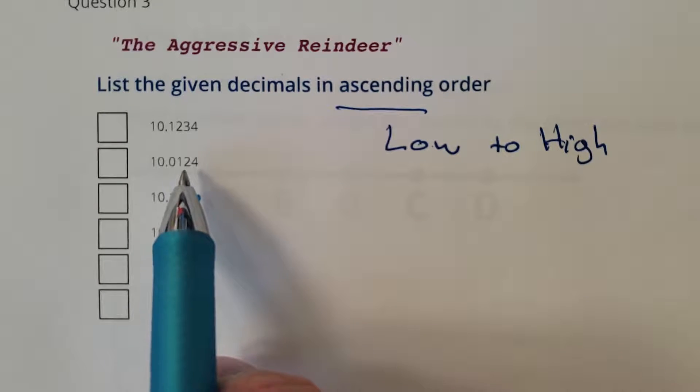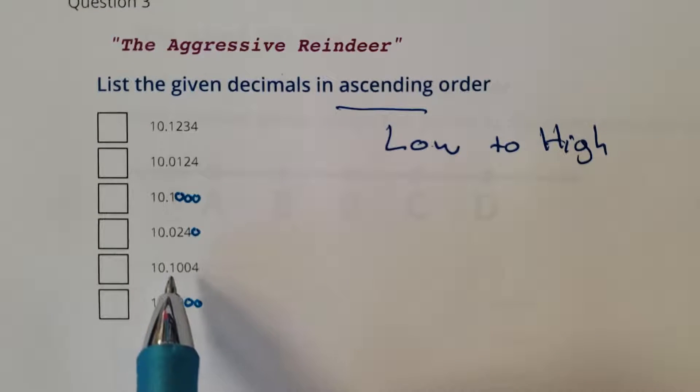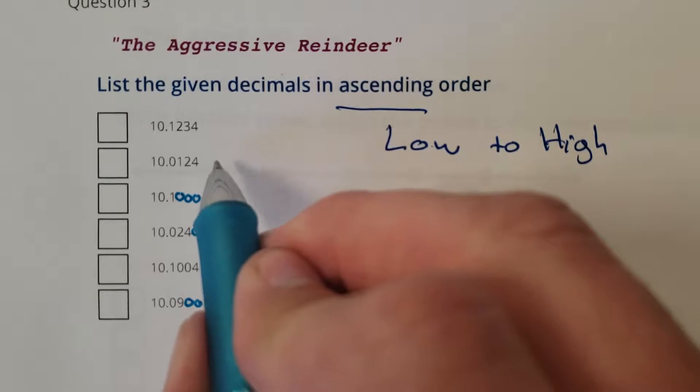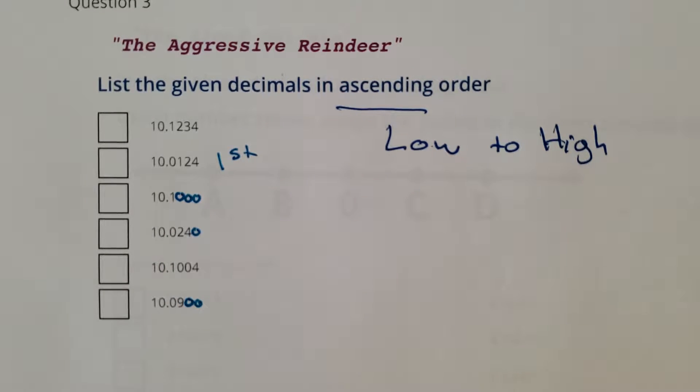The smallest number I see now is 124 - 10.0124. Yeah, you're the smallest right there, so you would be first in this list. We have 124.